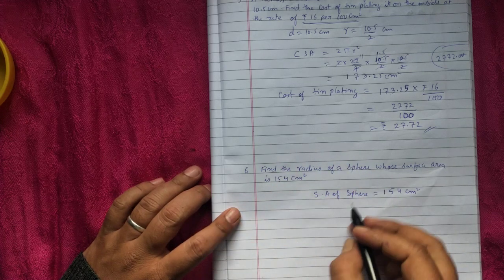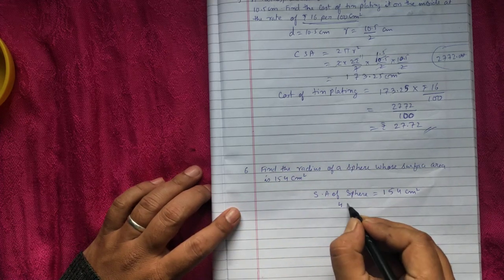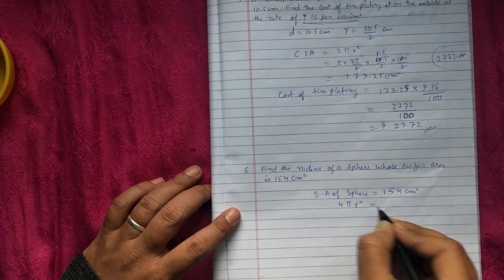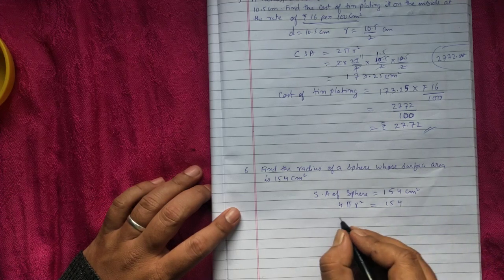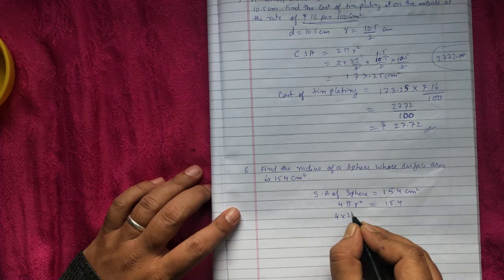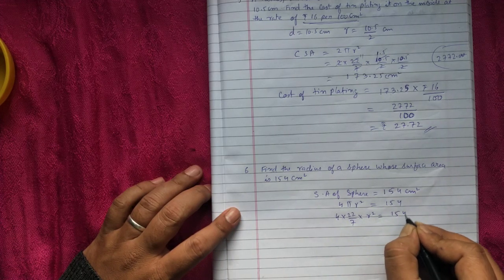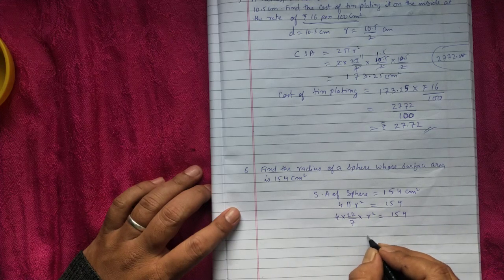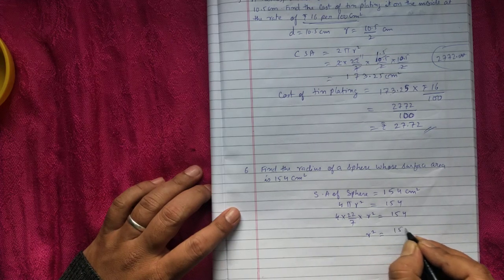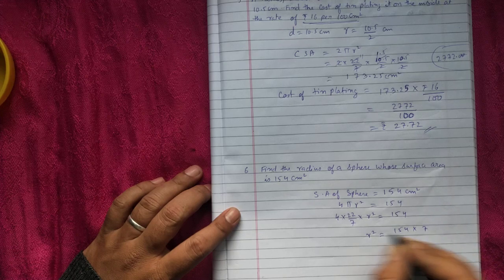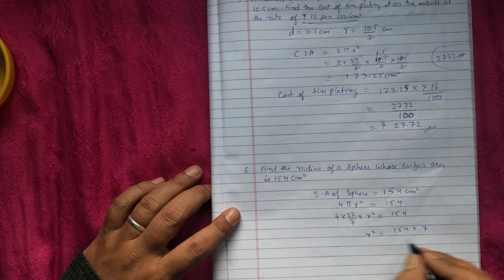Formula is 4 pi r square equal to 154. 4 into 22 by 7 into r square equal to 154. So cross multiply 154 into 7. 7 goes up and these two numbers will come down, 4 into 22.